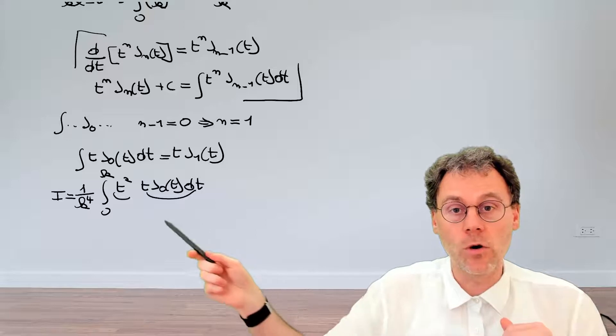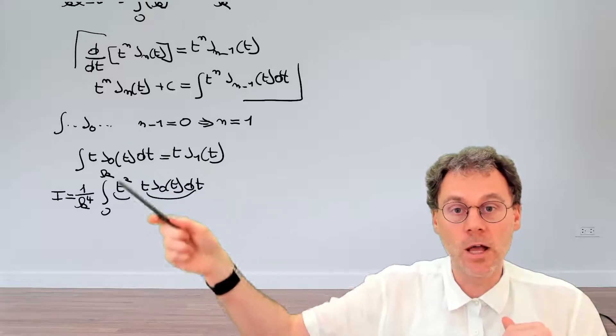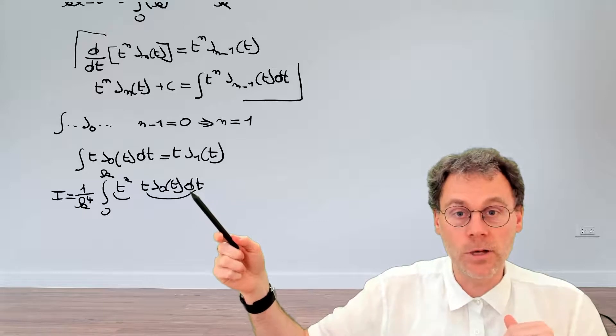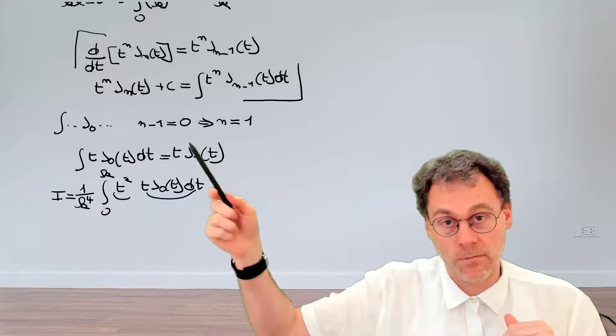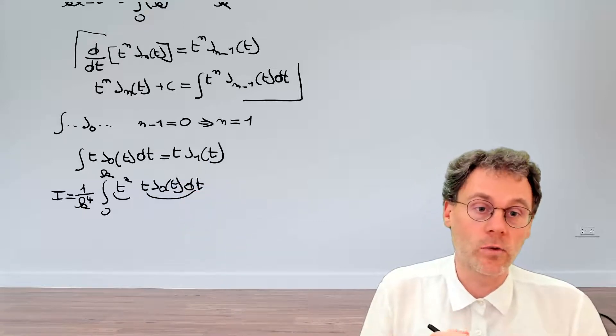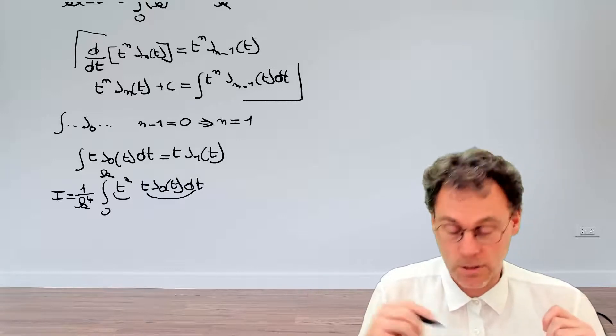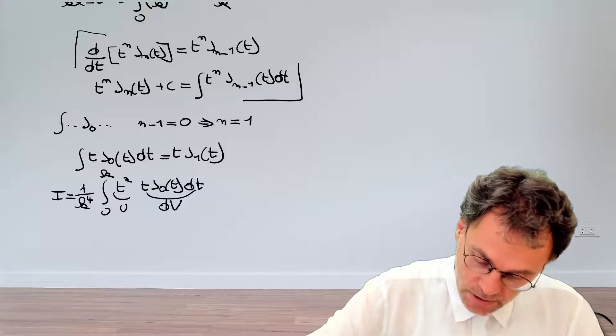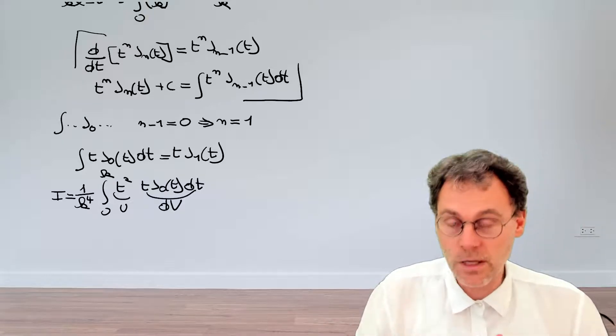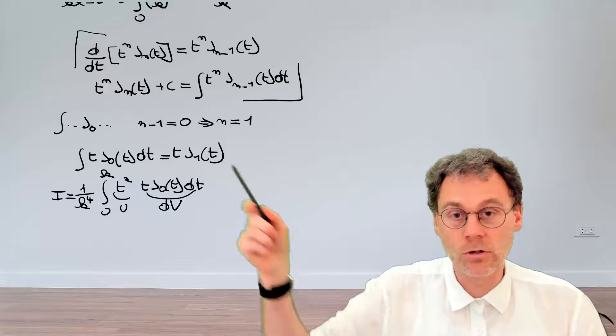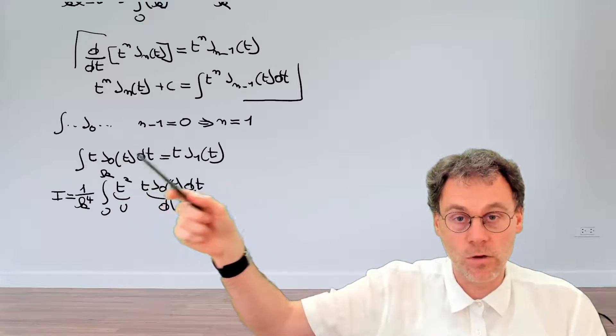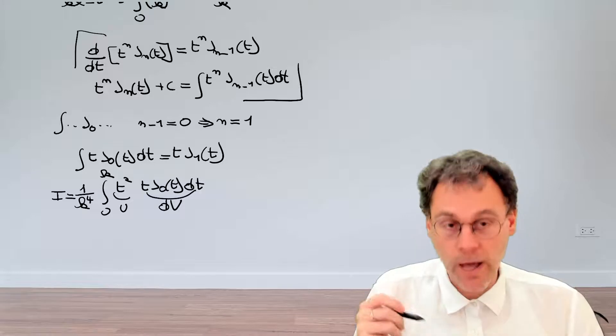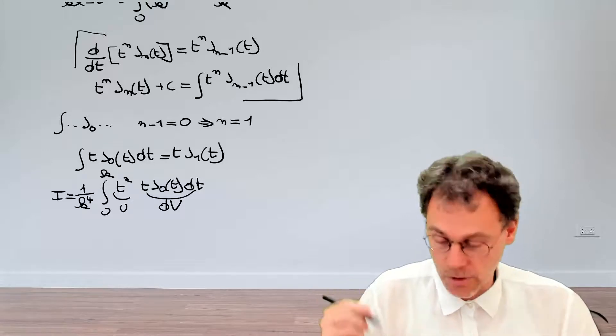Obviously the way to go is to have this factor here play the role of dv. Why? For the simple reason, because we know what v is. Thanks to that formula over here, we can calculate that. So this is u, this is dv. And then v, of course, is the integral of t J_0, which is equal to t J_1. So now we have all the ingredients to apply integration by parts.